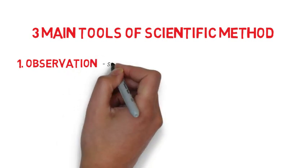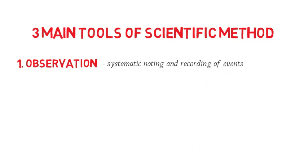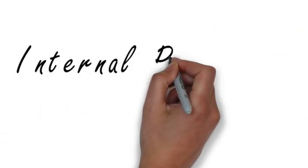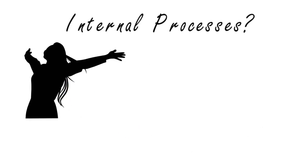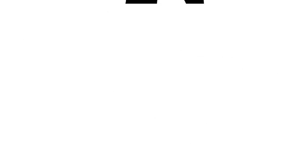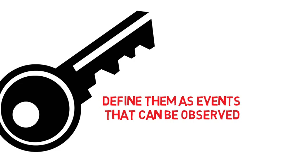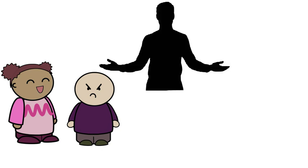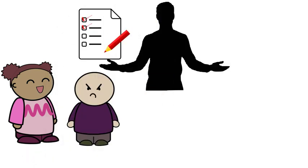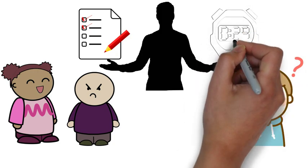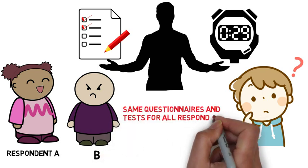First, we have observation. Ito yung systematic noting and recording of events. You must keep in mind that only events that are observable can be studied scientifically. So the key to studying internal processes like feelings, thinking, or problem solving is defining them as events that can be observed. For example, gusto nyong pag-aralan yung feeling ng isang tao — make him or her answer a mood questionnaire. Or if gusto mo naman pag-aralan yung problem solving nila, i-record mo yung time kung kailan nila matatapos yung intelligence test. Our observations should also be systematic and consistent for all participants.